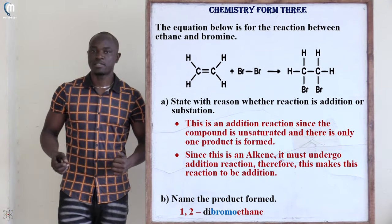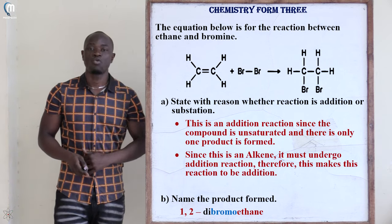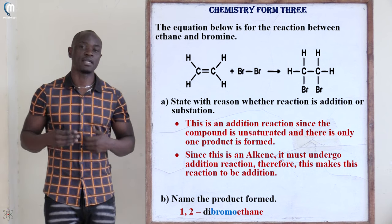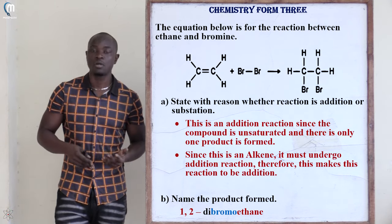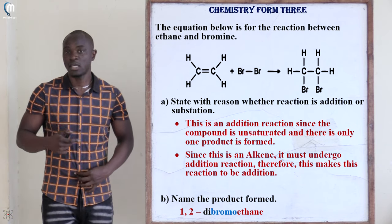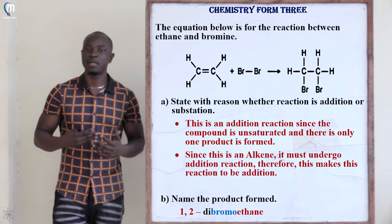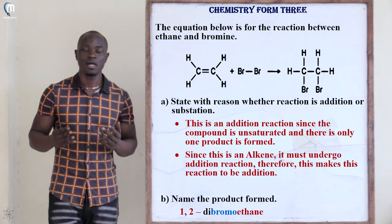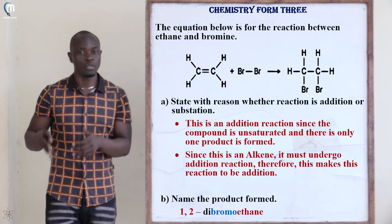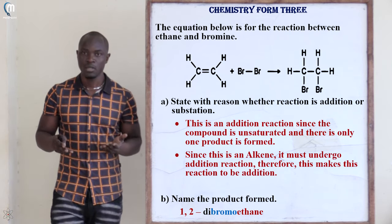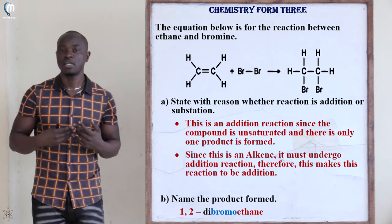The next question shows a reaction between ethene and bromine. You can see an alkene reacting with bromine — this can be halogenation or an addition reaction. The question asks whether this is an addition or substitution reaction. It is an addition reaction because bromine breaks the double bond, and since the hydrocarbon is unsaturated, it undergoes addition.